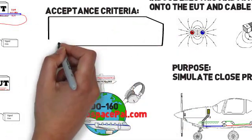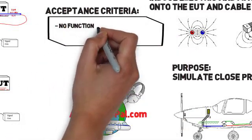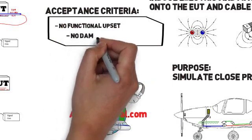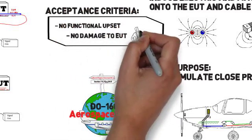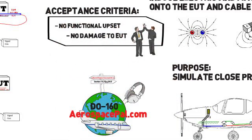The acceptance criteria for each one of these tests is the functional upset tolerance test. Monitor your unit during the test and ensure that there's no performance degradation and that you've passed the test.